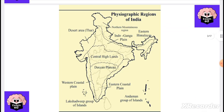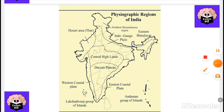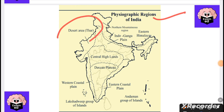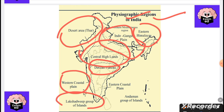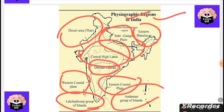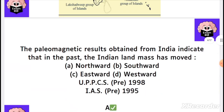Here is the map. You can see the desert area, the northern plains, the Indo-Gangetic plains, the eastern Himalayas, the central highlands, the Deccan Trap and Western Coastal Plain, the Lakshadweep Group of Islands, the Eastern Coastal Plain, and the Andaman and Nicobar Islands.